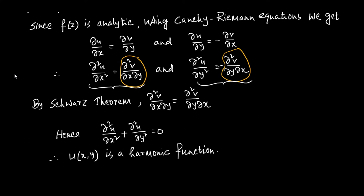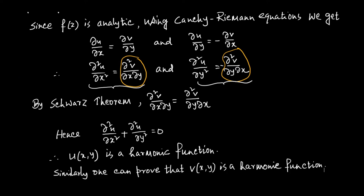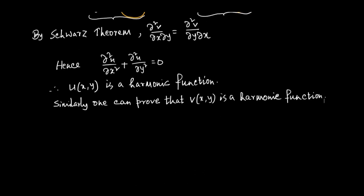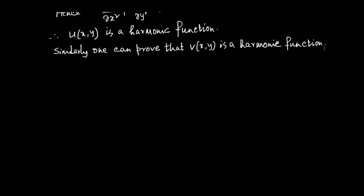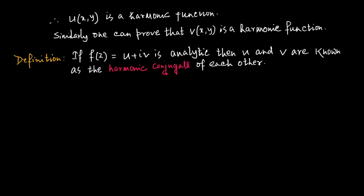Similarly, one can prove that v(x,y) is also a harmonic function. We define u and v as harmonic conjugates of each other: if f(z) equals u plus iv is analytic, then u and v are known as the harmonic conjugate of each other.